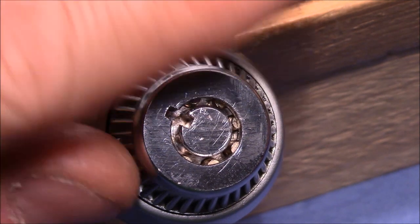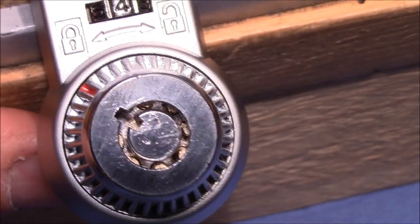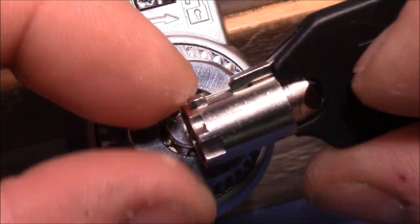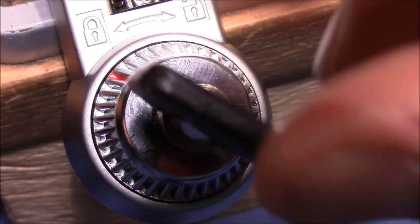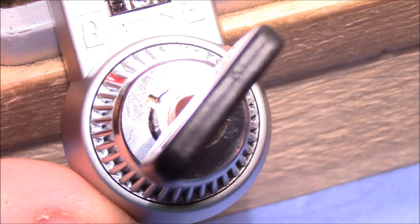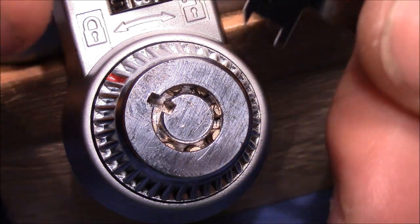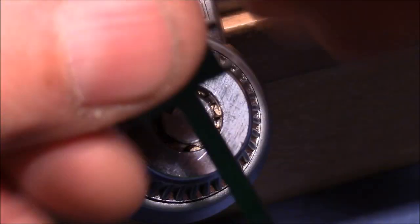First I want to pick the tubular lock. It's a tubular lock with seven pins. Here is the key lock and it's locked up. For tensioning I use this fancy tension tool.